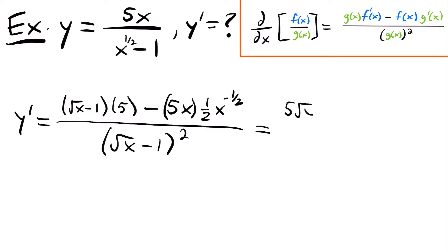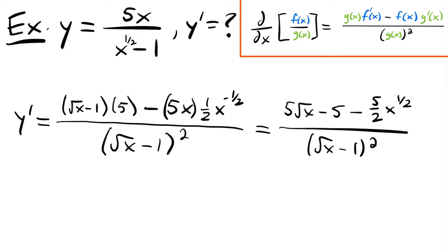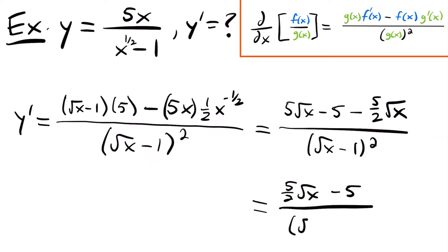So now let's simplify. We'll have 5 times the square root of x minus 5 halves — I'm taking this 1/2 and multiplying it by 5, then multiplying our variables together and adding their exponents. So x to the first power times x to the negative 1/2 power gives us x to the positive 1/2 power, because 1 plus negative 1/2 equals positive 1/2. That x to the 1/2 power is just the square root of x. Combining 5 times the square root of x and negative 5/2 times the square root of x gives us positive 5/2 times the square root of x. So our final answer is 5/2 times the square root of x minus 5 divided by the square root of x minus 1 squared.